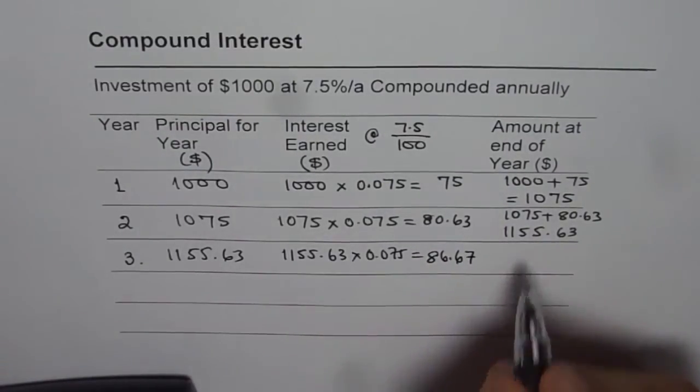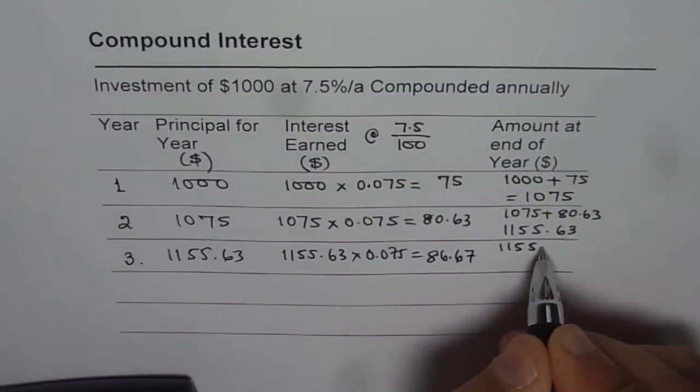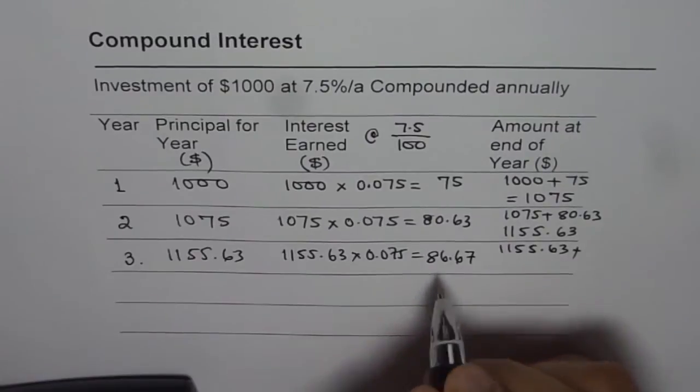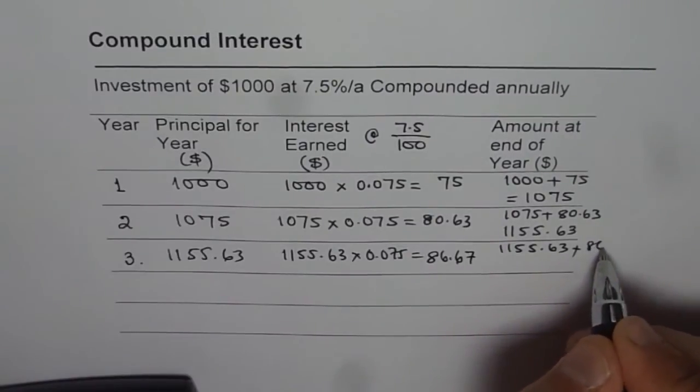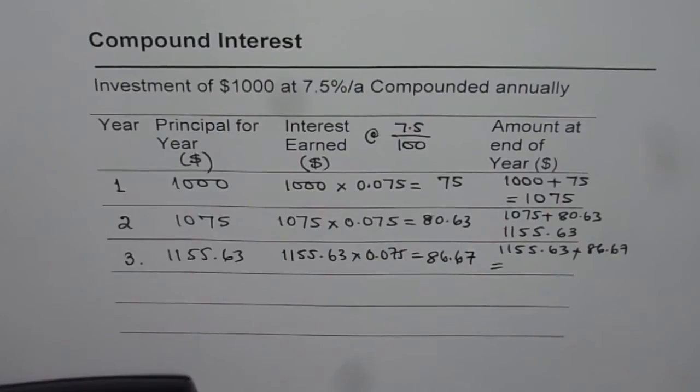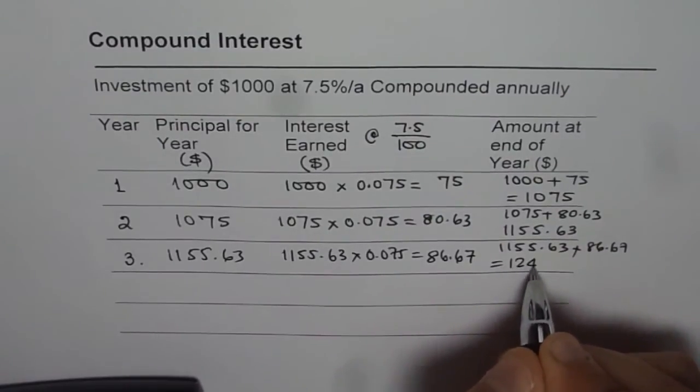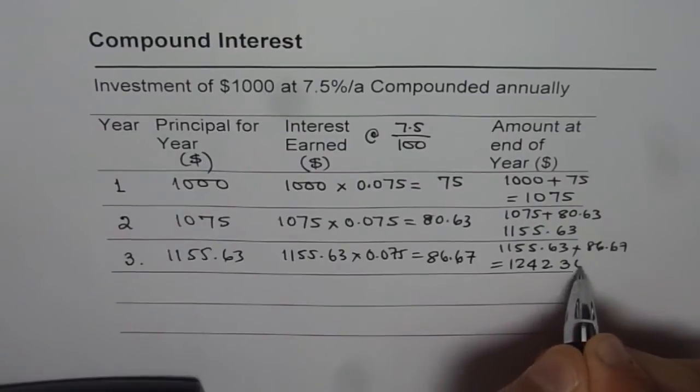The total amount at the end of the year will be original amount of 1,155.63 when we started the year with, plus 86.67. Let us add the two. It gives us a value of 1,242.30.